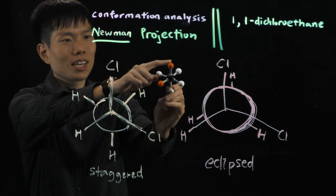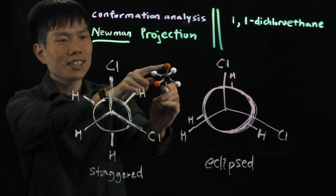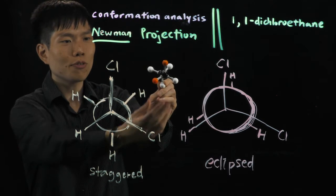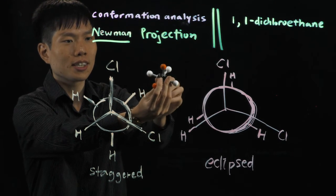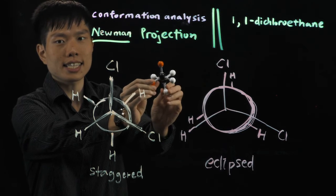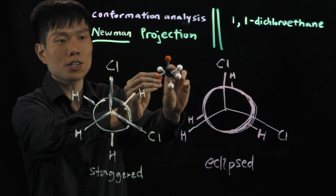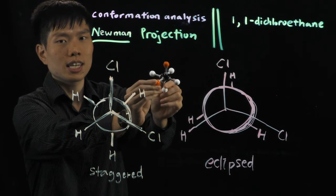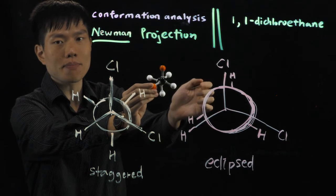So, chlorine and chlorine here side by side. Now, if you notice that no matter how I turn—you see, still staggered, still staggered—but as I turn, what happens is the relative positions of the chlorines remain the same.